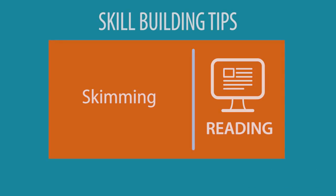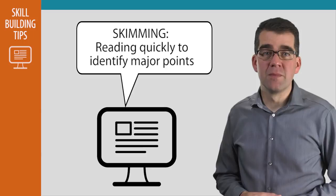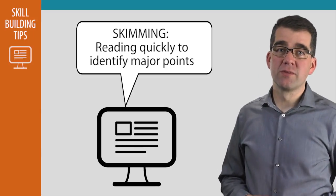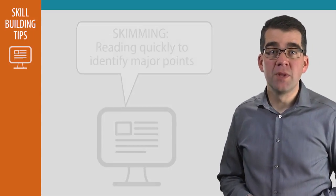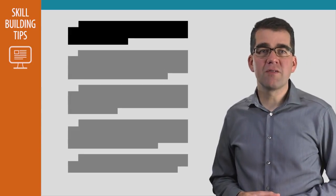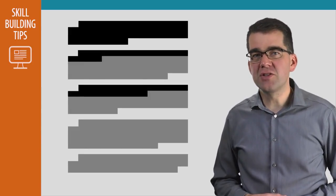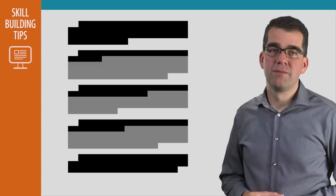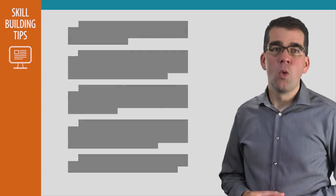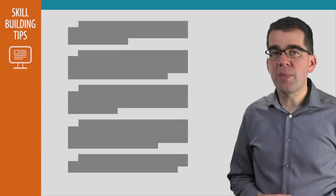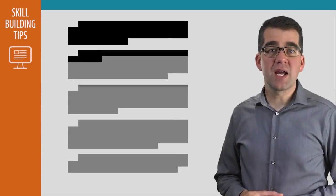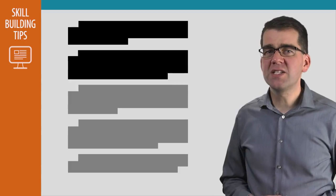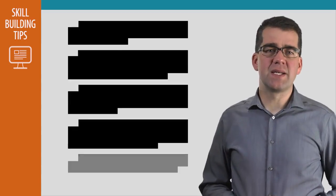One way to build your reading skills is by practicing skimming, which is reading quickly to identify major points. One way to skim is to read the introductory paragraph, then the first sentence of each of the middle paragraphs, and then read the concluding paragraph. When you're practicing, try reading a passage twice — the first time skimming to get the main ideas, then read it again more carefully to see if you really did get those main ideas.